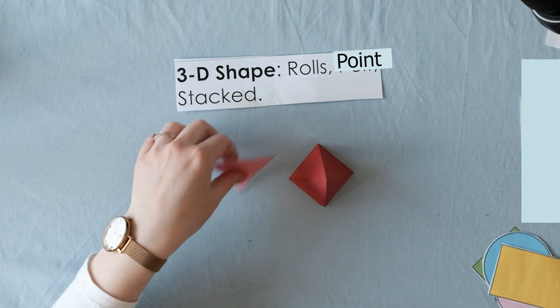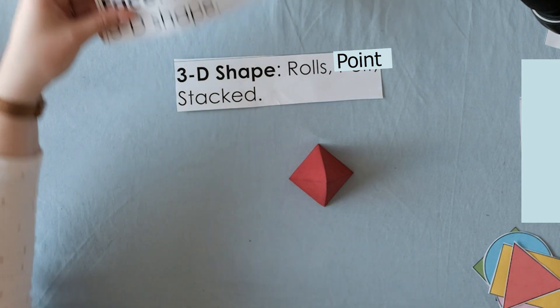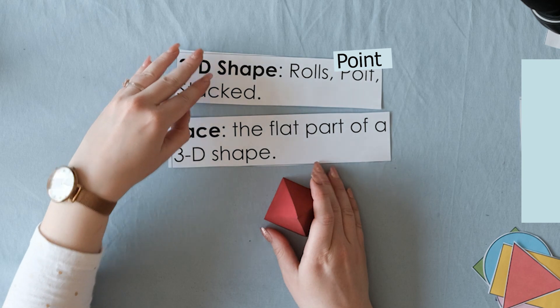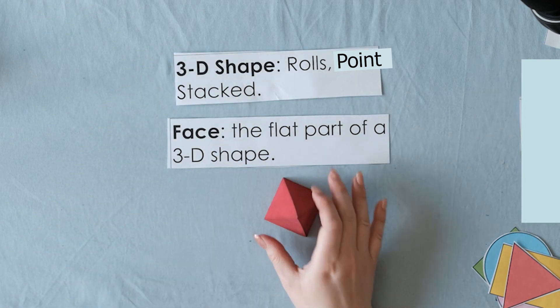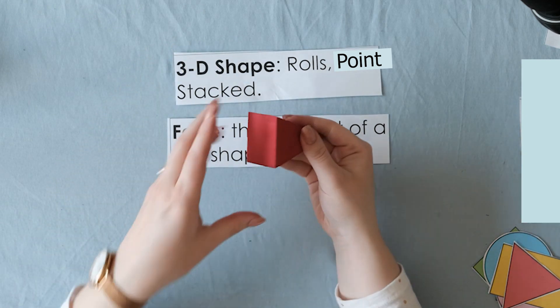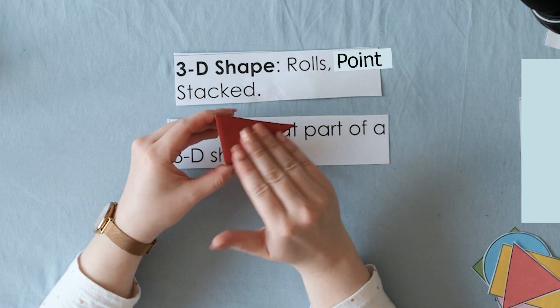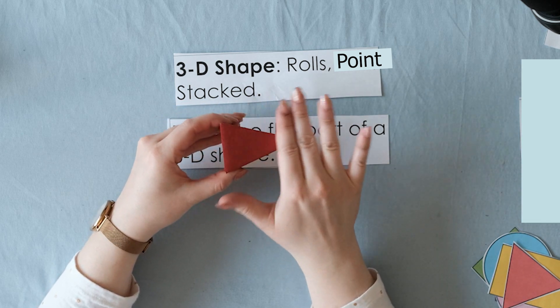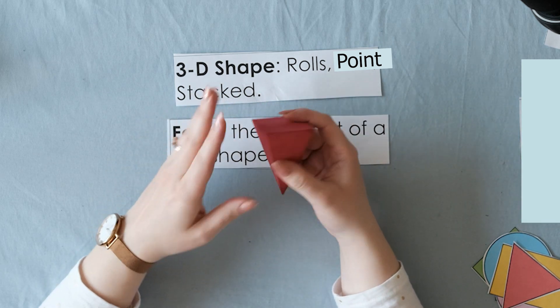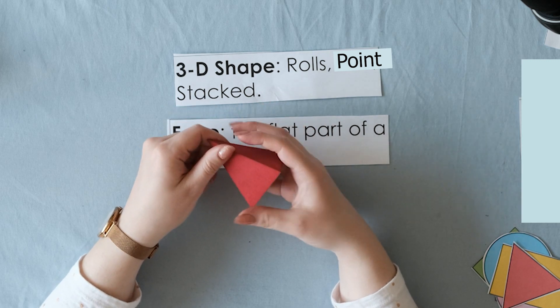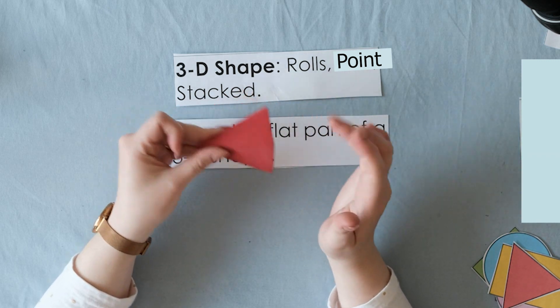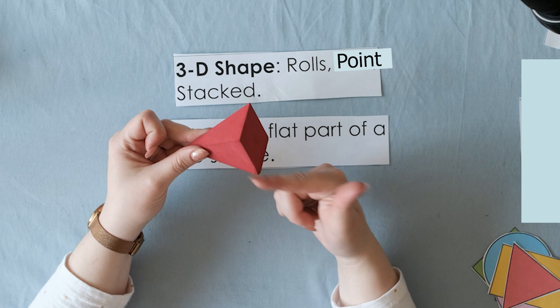So when we learn about 3-D shapes, we have something called a face. So the face is the flat part of a 3-D shape. So this shape here has some faces. You can feel it's flat, flat, flat, flat. So this shape has five faces. One, two, three, four, five on the back.